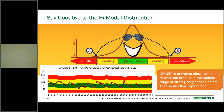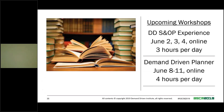DDMRP has proven to allow companies to plan and execute in the optimal range at strategically chosen points — at our strategic buffers. That means flow is protected and the chaos calms down.